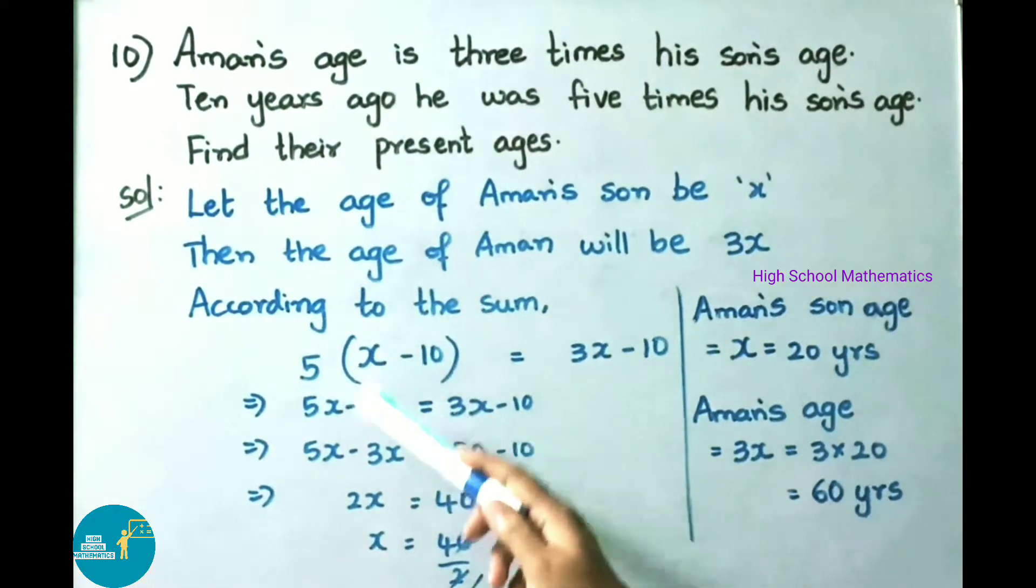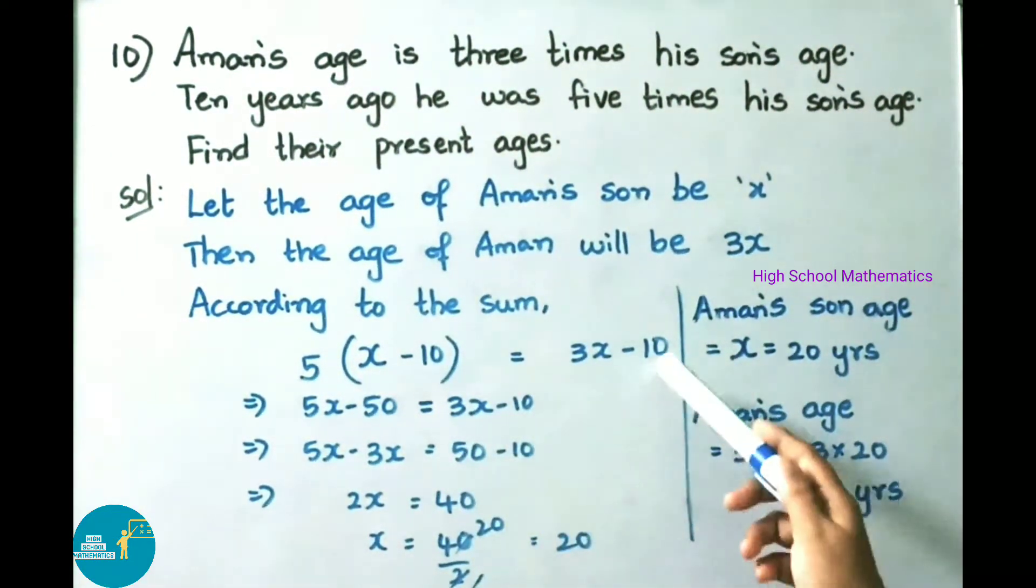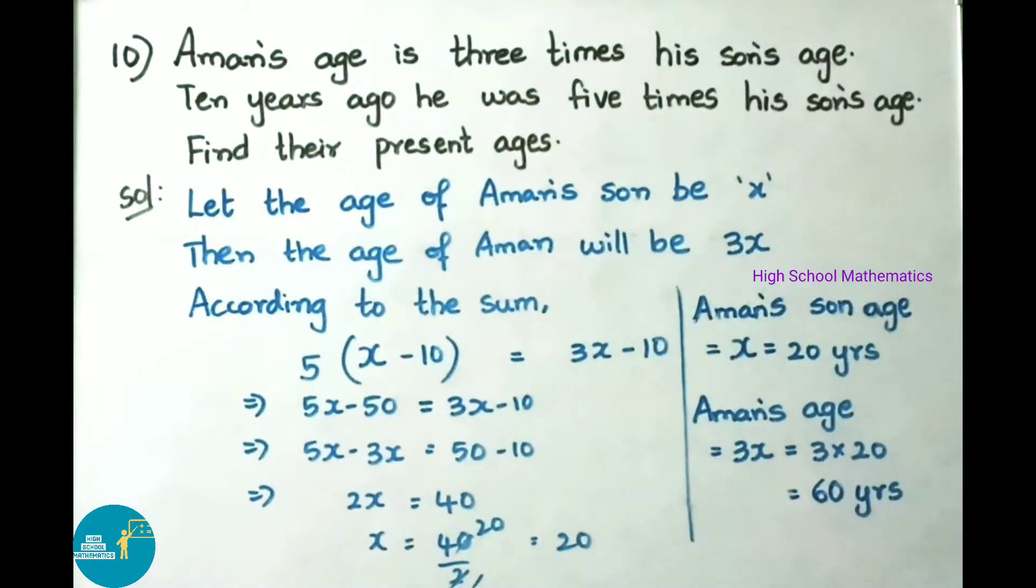That implies 5 into x, 5x minus 5 into 10, 50, equals 3x minus 10. That implies 5x minus 3x equals minus 50 on transposing. So 5x minus 3x equals 50 minus 10. That implies 2x equals 40. Next, x equals 40 by 2. 2 twenties are 40. So x value is 20.